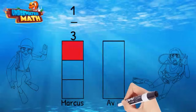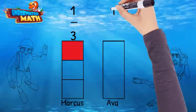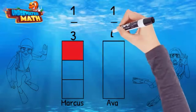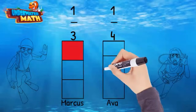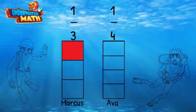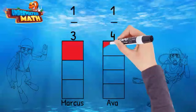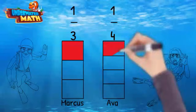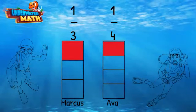We'll put Ava's model on the right. She finished one-fourth of her homework, so we will divide her model into four equal parts. Since she finished one-fourth of her homework, we need to shade one part. Looking at the models, it's clear that Marcus's model has more shaded than Ava's model, so this fraction must be bigger.